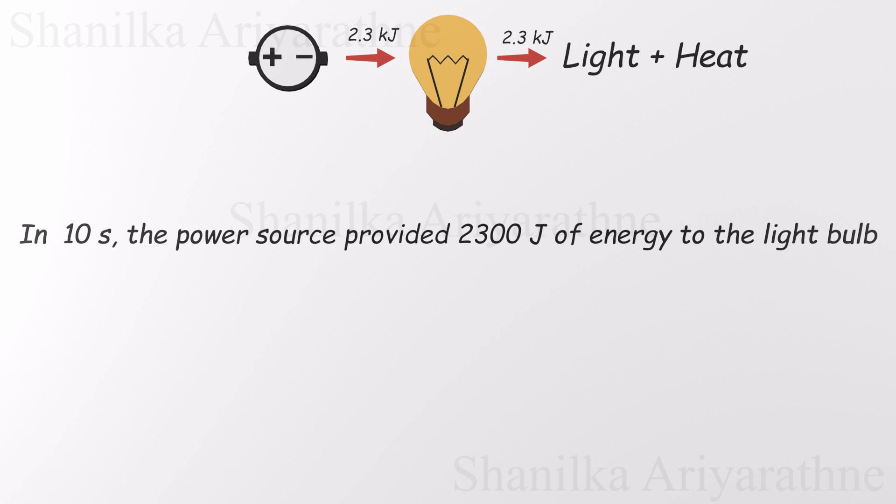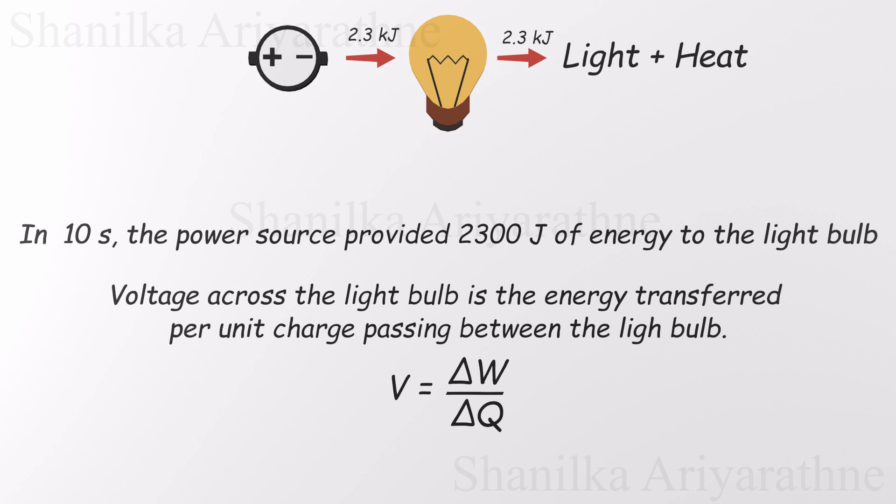Now here's the connection. Voltage is the amount of energy transferred per unit of charge. In simple terms, it tells us how much energy each coulomb of charge delivers to the light bulb as it passes through. We know how much work was done. It's 2.3 kilojoules.